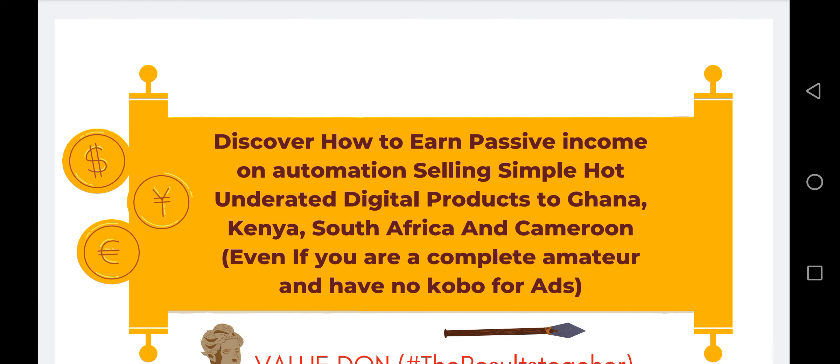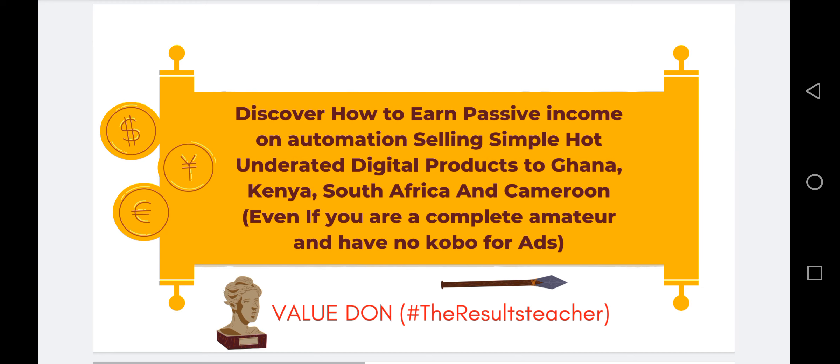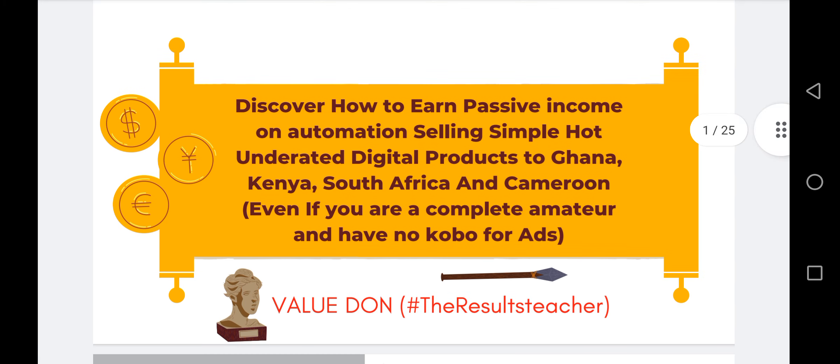Welcome to this presentation where I'm going to share how you can earn passive income on automation, selling simple underrated digital products to Ghana, Kenya, South Africa, Cameroon, and any other African country where they speak English. Even if you are a complete amateur with no budget for ads, this will work for you and make you good income — not just now, but over and over again. Once you get started, you only have to rinse and repeat and keep making money.